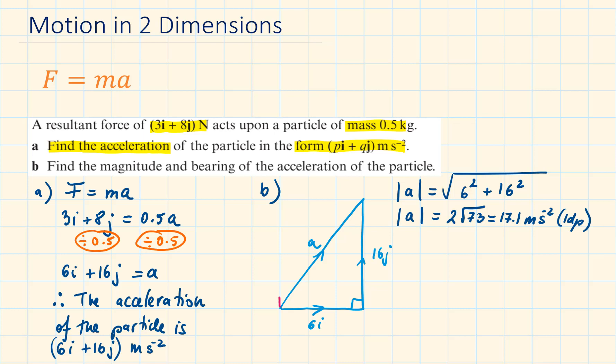To represent the bearing of the acceleration, we start by drawing out the north line. And we measure the bearing from the north line clockwise. The north line with the x-direction will form a 90 degree angle. We can work at the angle theta and then subtract it from 90 degrees. Or if we want to get the answer straight away,